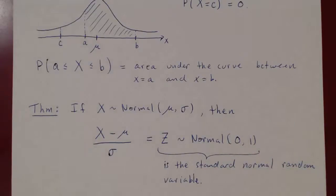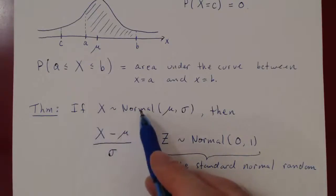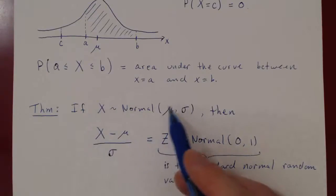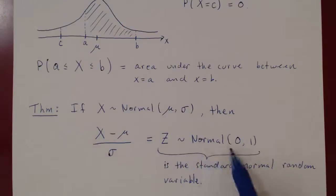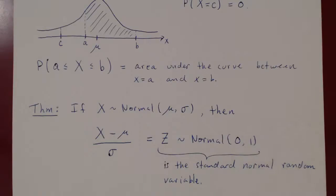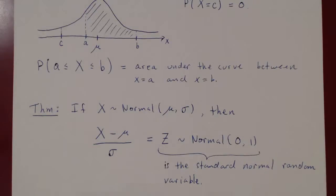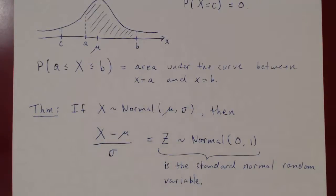The idea is: if you ever want a probability about a random variable that is normal, no matter what the mean and the deviation, standardize it, and then you can always use the single normal distribution with a mean of 0 and a standard deviation of 1. Before we consider examples, let's look at a few more theorems about transforming normal random variables.